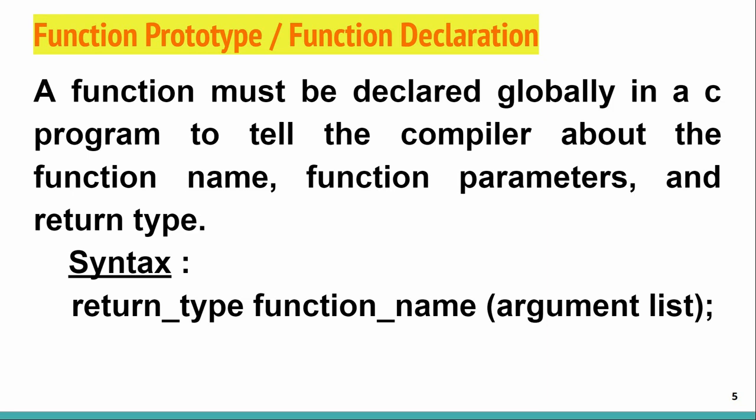The first component is the function prototype or function declaration. A function prototype must be declared globally in a C program to tell the compiler about the function name, function parameters, and return type. It is usually declared near the header file, after the standard input/output header file. The first thing you write is the return type — whether it returns an integer, float, or character value. If it is not going to return anything, you write void.